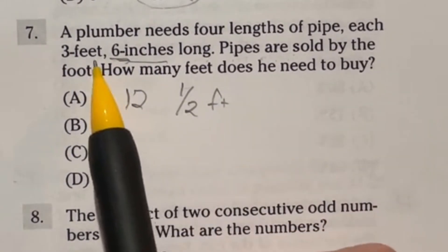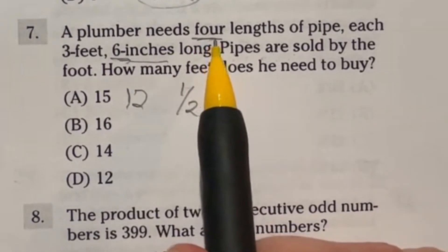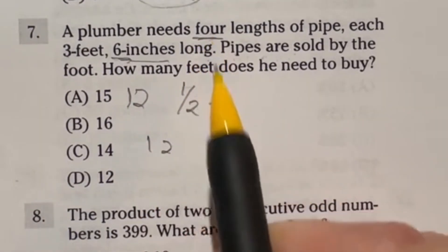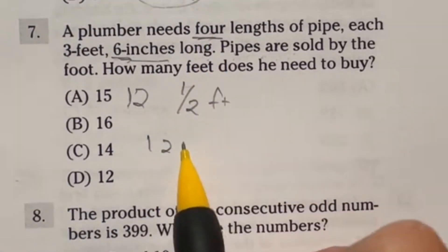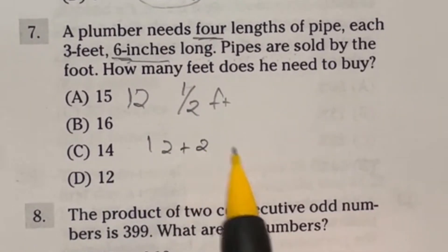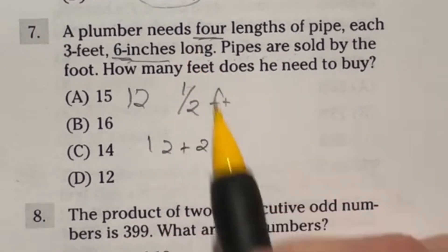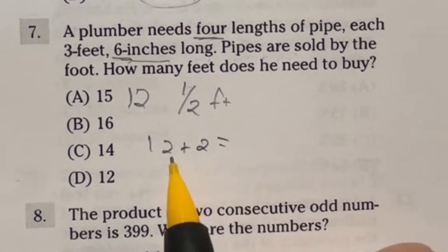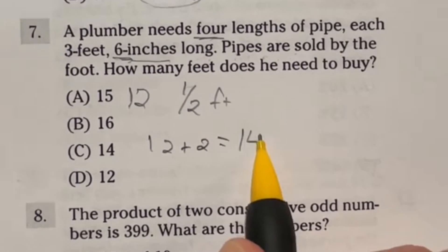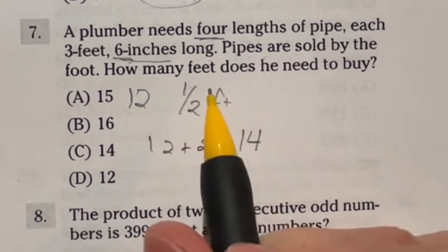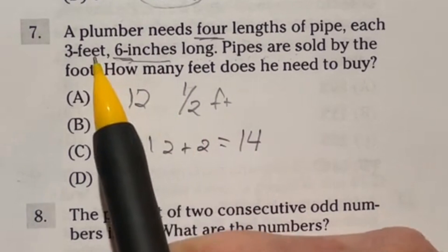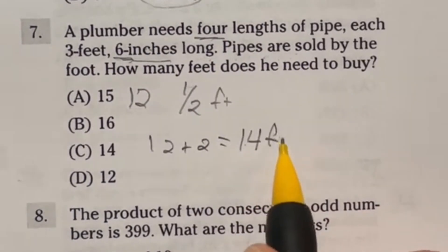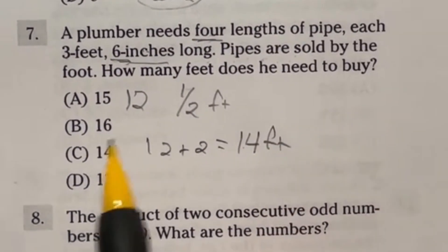So that means that six inches is really half of a foot. Now we're looking at four of these. Well, four times three is going to give me 12. And then I also have four halves, so that's plus another two because half plus half gives me one, and the other half plus half gives me another one. So 12 plus two gives me a total of 14. So our final answer here is C.